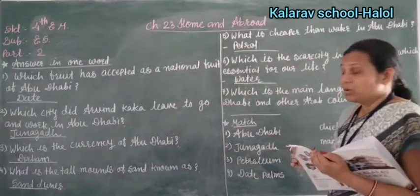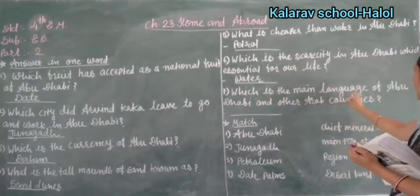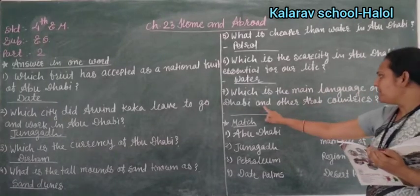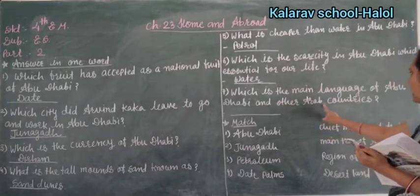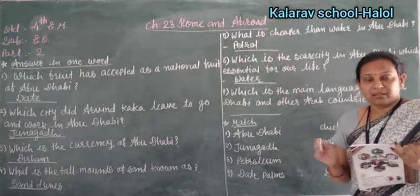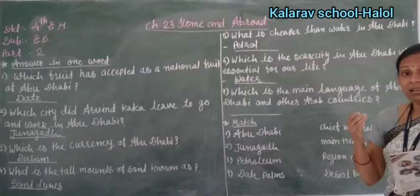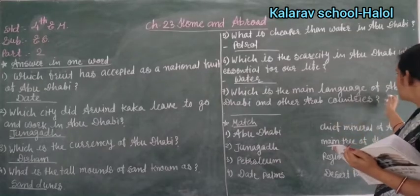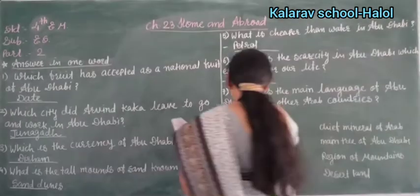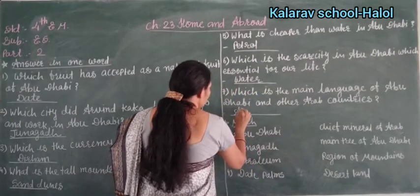Seven number: which is the main language of Abu Dhabi and other Arab countries? It is Arabic. Arabic is the language of Abu Dhabi and other Arab countries as well.